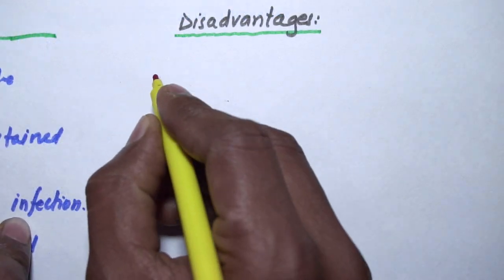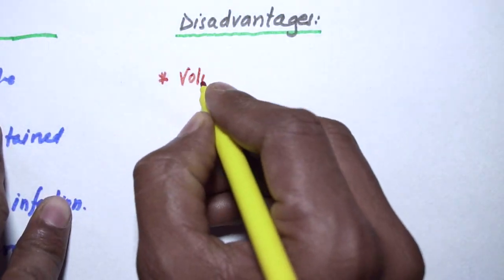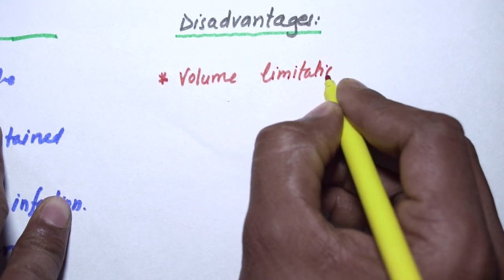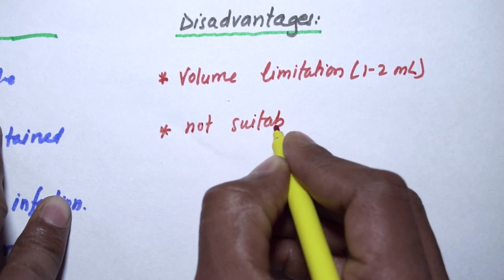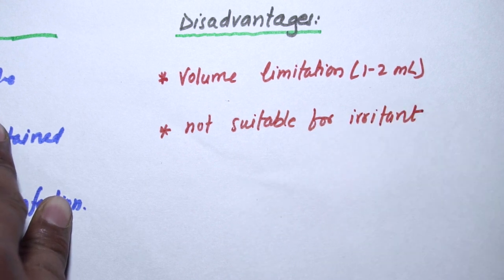Depot preparation can be injected, for example pellet implantation, silastic and biodegradable implants. Coming to disadvantages: volume limitation is there, we can give only 1 to 2 ml of drug at a time, not suitable for irritant substances.